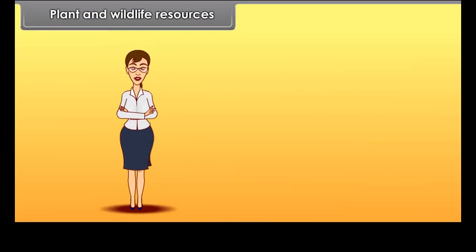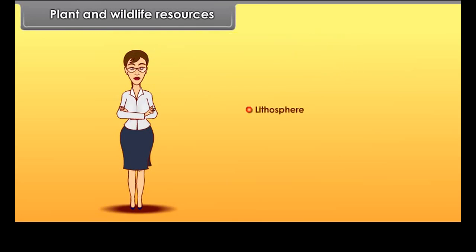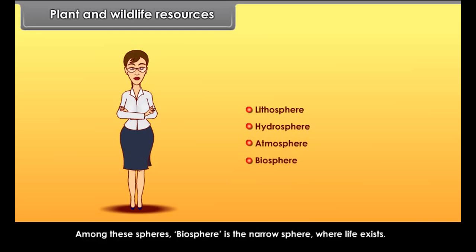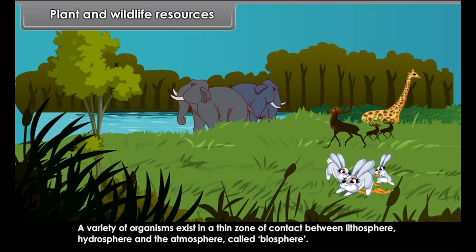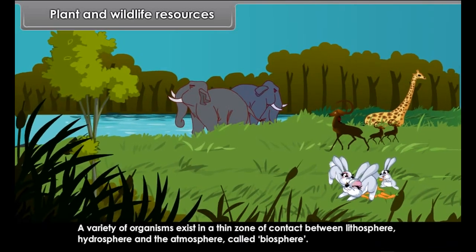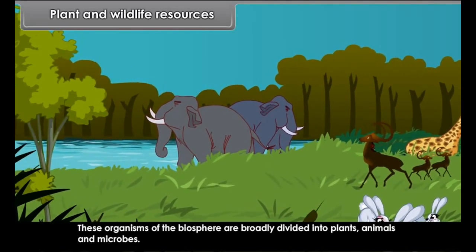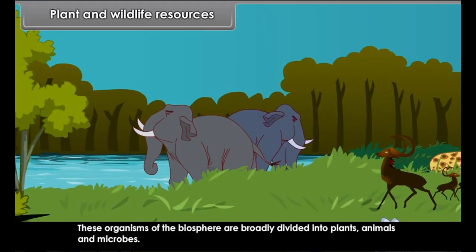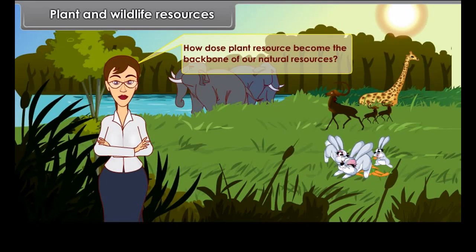Do you know which are the spheres of the earth? They are the Lithosphere, Hydrosphere, Atmosphere and Biosphere. Biosphere is the narrow sphere where life exists. A variety of organisms exist in a thin zone of contact between lithosphere, hydrosphere and the atmosphere called the biosphere. These organisms of the biosphere are broadly divided into plants, animals and microbes.